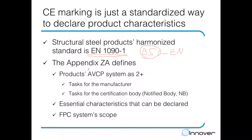As you may remember from the last lecture, the key section in the harmonized standard is always Appendix ZA. The attestation of conformity system is 2+, meaning there are tasks for the manufacturer and tasks assigned to a certification or notified body. The appendix also defines all the essential characteristics that can be declared as part of the CE marking, and it gives the FPC system scope that you must set up to prove those essential characteristics.